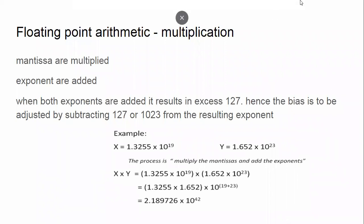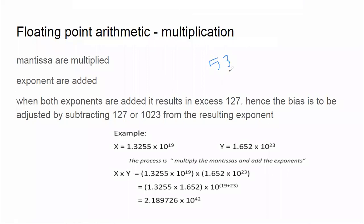For example, if you have one exponent as 53 and another as 80, when you add them you get 133. Now 133 should not come in a 32-bit representation as-is, so in that case we subtract 127. Whatever the subtracted value is, that will be the normalized exponent — that is the meaning of the bias adjustment.